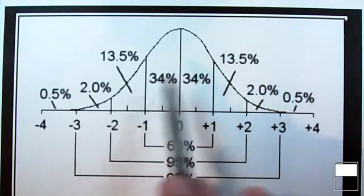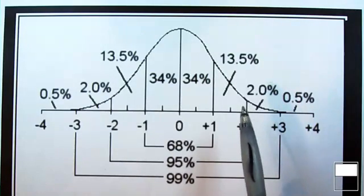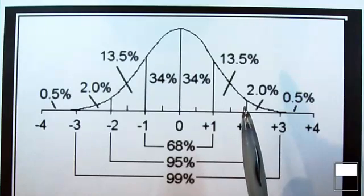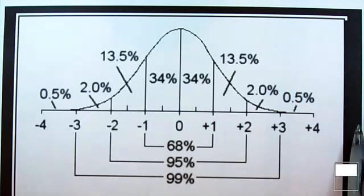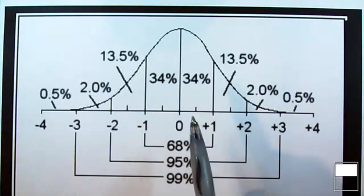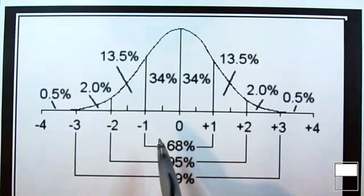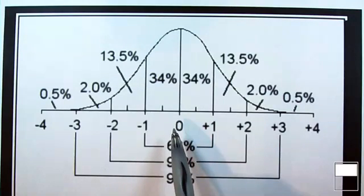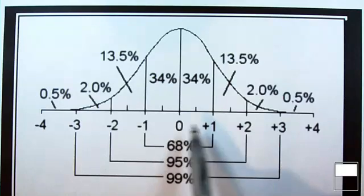The normal distribution, discussed in Chapter 7, is a distribution of continuous scores — scores that can take all values from zero out positively or down negatively. It's perfectly symmetrical. In the normal distribution, scores are reported in terms of z-scores, which, as you've learned in Chapter 4, have a mean of zero and a standard deviation of one.